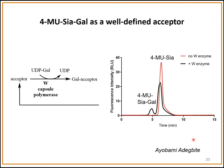Currently we are moving towards a more well-defined acceptor, first described by Rita Girardi-Shan's group, which is a 4MU (4-methylumbelliferyl) modified sialic acid. We use the serogroup W enzyme to add a galactose to this, since it has been shown that this enzyme needs at least a degree of polymerization of two to work with an acceptor.